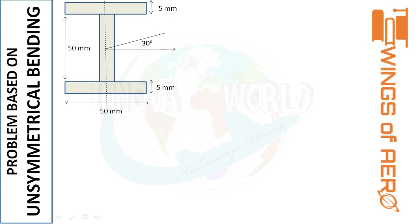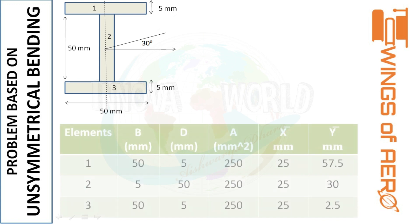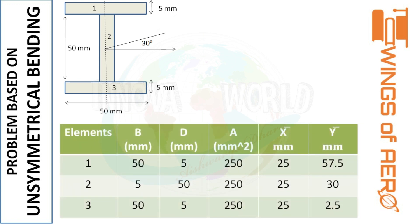Our first step is to split the I-section into elements: section 1, section 2, and section 3. After splitting, we form a table listing for each element the values of b, d, area, x-bar, and y-bar, where x-bar and y-bar are the individual centroid coordinates for each element. For element 1, b is 50 mm and d is 5 mm. For element 2, b is 5 mm and depth is 50 mm. For element 3, b is 50 mm and depth is 5 mm. Accordingly, we calculate the area for each respective element.